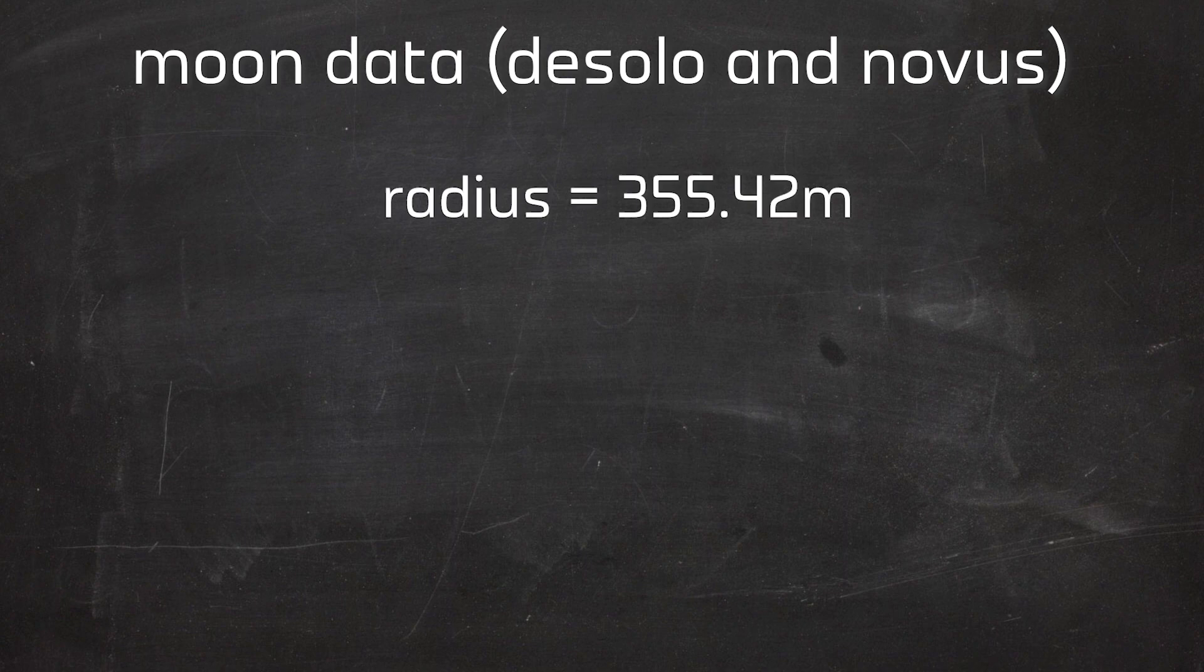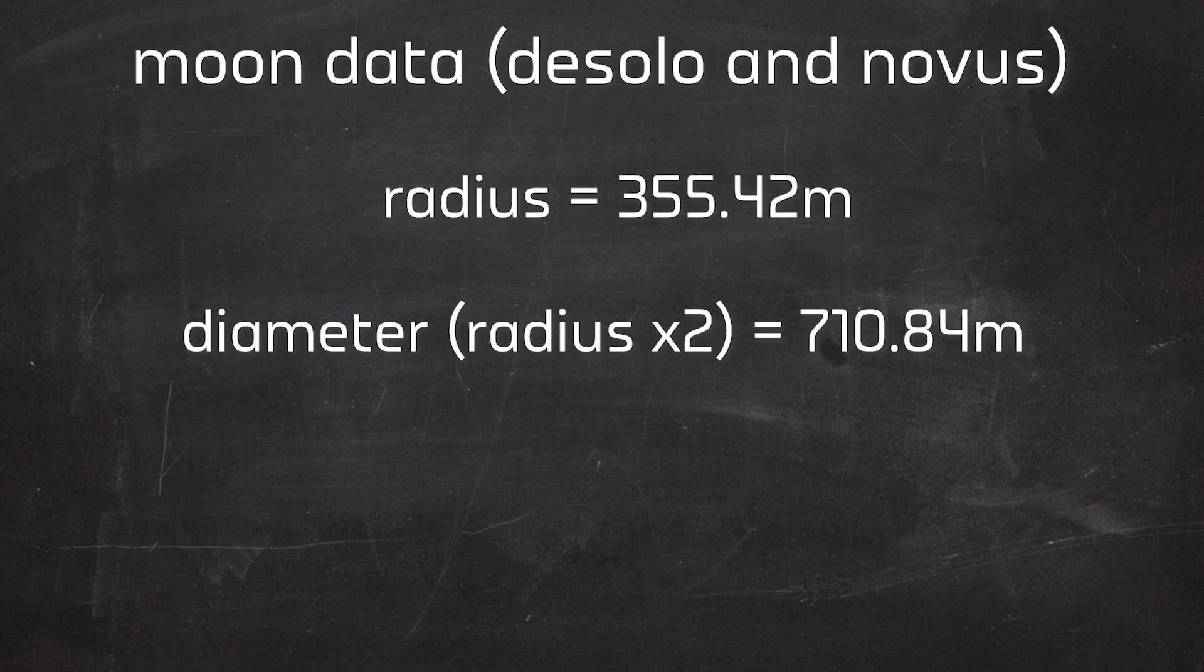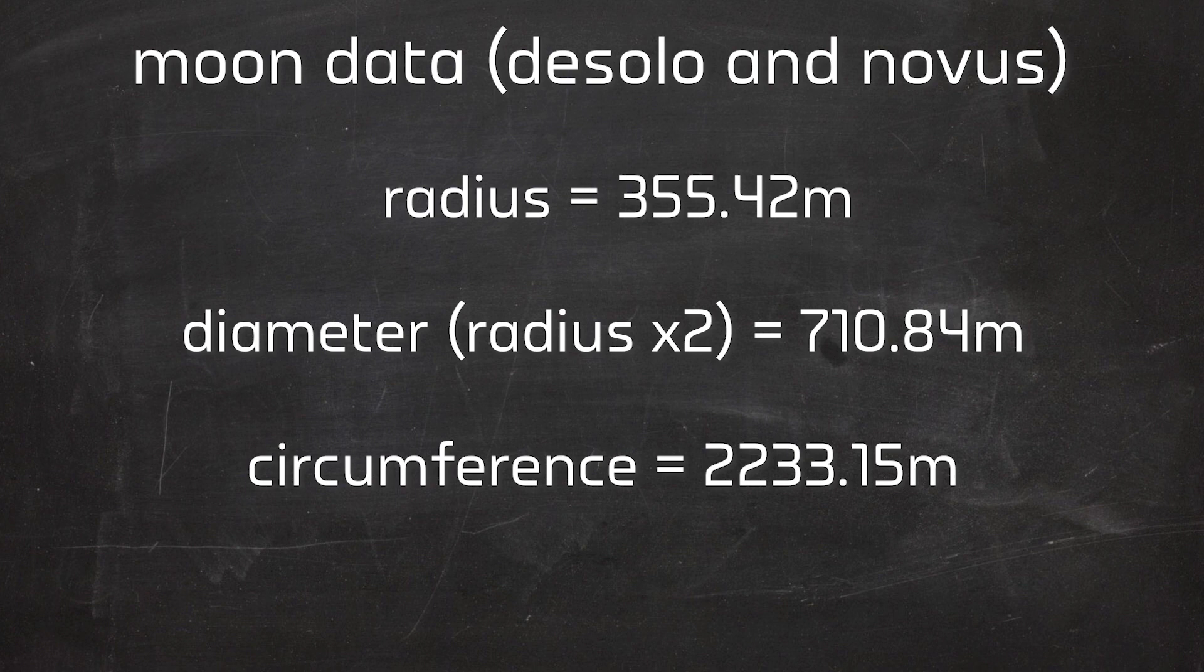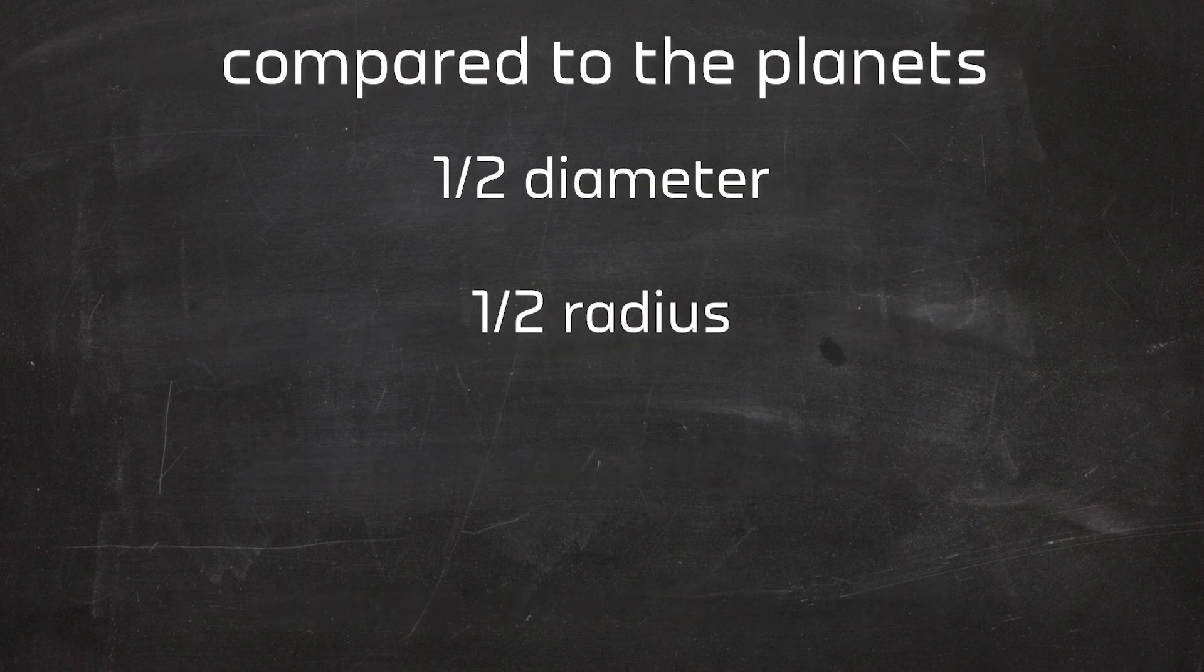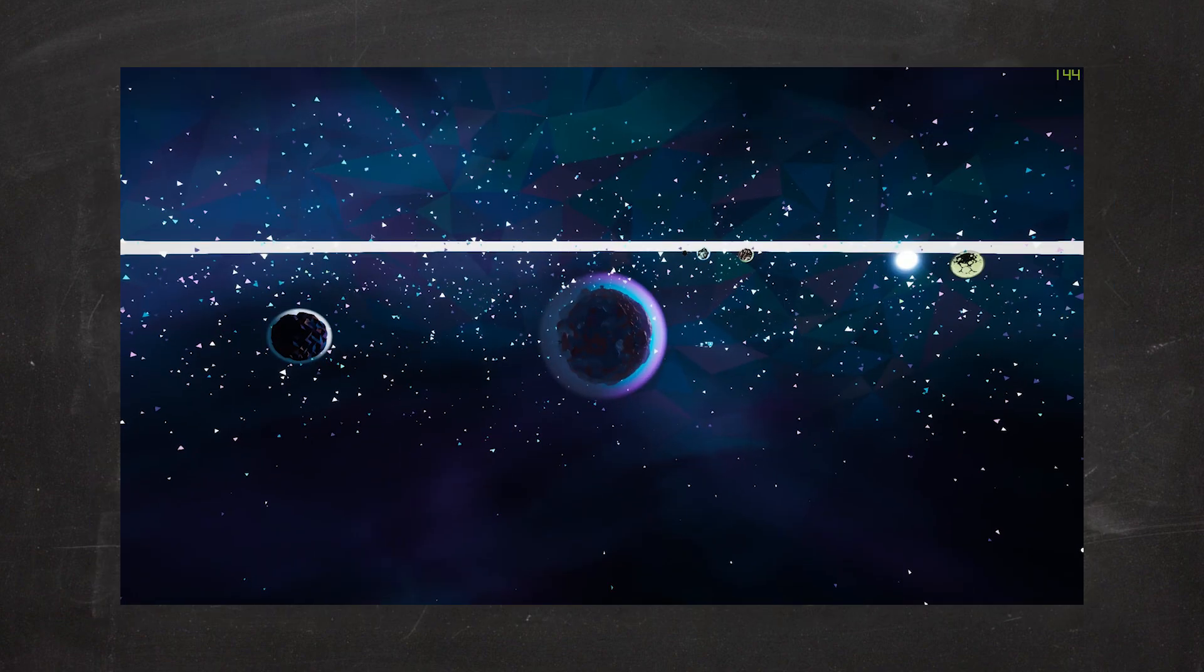Radius is 355.42 meters. The diameter is 710.84 meters. The circumference being 2,233.15 meters, like I said before. And the surface area is 1,587 kilometers squared. The moons in this game have half the diameter, radius, and circumference, but a quarter of the surface area of the planets they orbit around. It kind of makes sense, actually. Just looking at these things, you can definitely see that my numbers worked out. You could jog around these moons in 15 minutes. That is crazy.